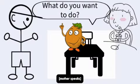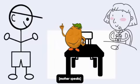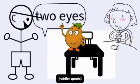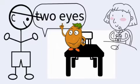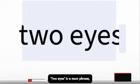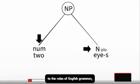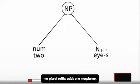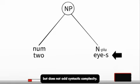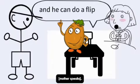Two eyes. "Two eyes" is a noun phrase — the number preceding a noun according to the rules of English grammar. The plural suffix adds one morpheme but does not add syntactic complexity.